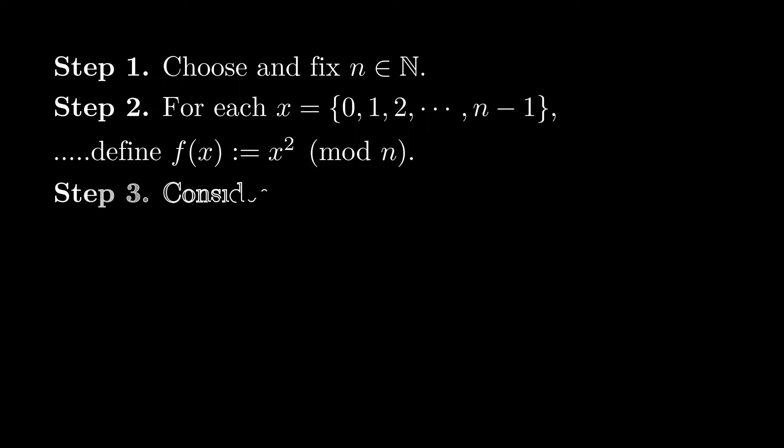Choose and fix the number n, then consider the function f of x, which is x squared modulo n. Now consider the directed graph where we draw an edge from x to f of x and see what the graph looks like.